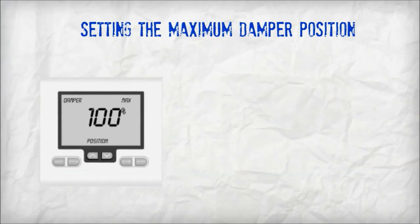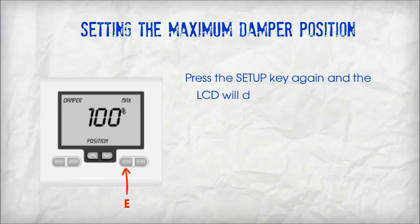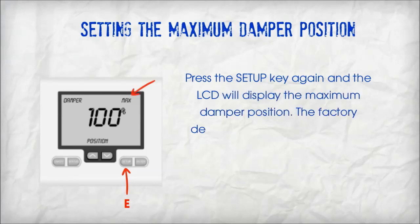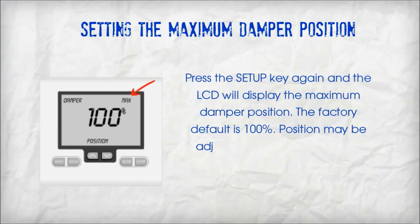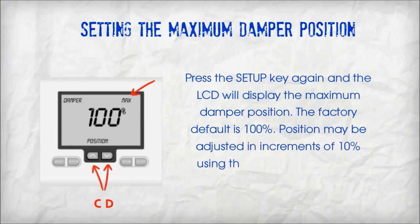Setting the maximum damper position. Press the setup key again and the LCD will display the maximum damper position. The factory default is 100%. Position may be adjusted in increments of 10% using the up and down keys.